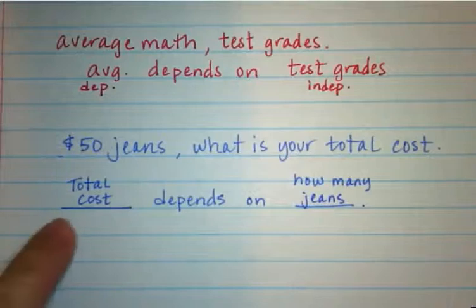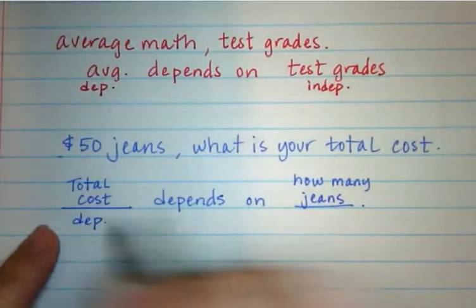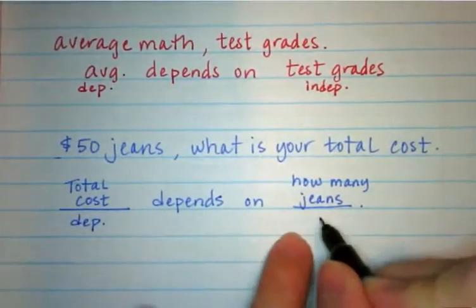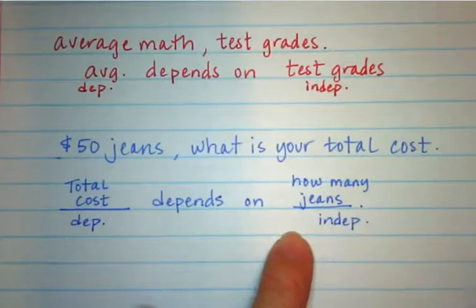So your total cost is going to be the dependent, and then the jeans, or the number of jeans, would be your independent.